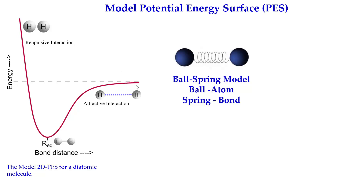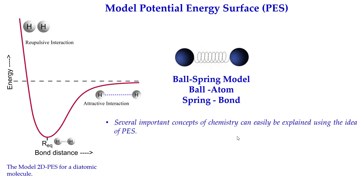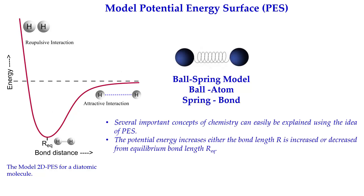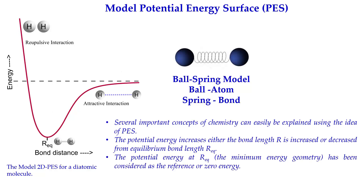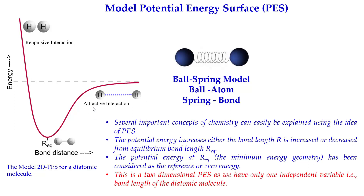This is the schematic potential energy surface for a diatomic molecule, and it is a two-dimensional potential energy surface because it is only the plot of energy versus the reaction coordinate, where the bond length is the reaction coordinate. From this surface we can understand that the potential energy increases whether the bond length is increased or decreased, so the equilibrium geometry is the most stable geometry. The potential energy at equilibrium bond length is considered as zero energy for the system. This is a two-dimensional PES as only one independent variable — the bond length — is available.